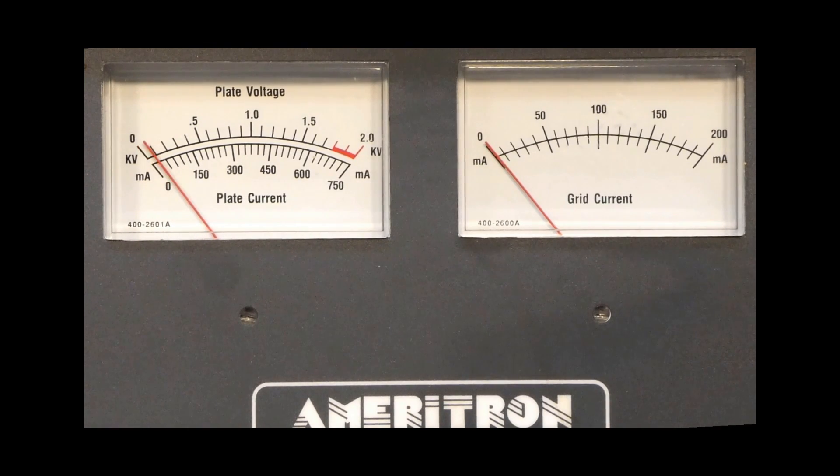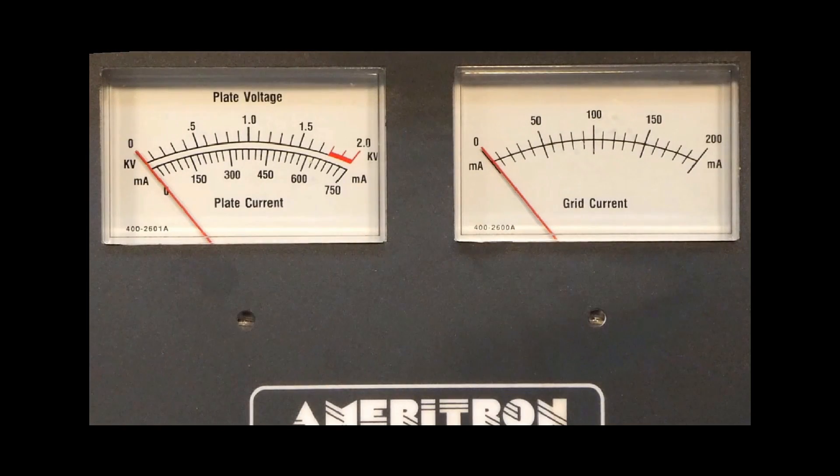Now this is an amplifier that has a shorted meter protection diode. It's the same situation: I have the radio in CW mode with no key plugged in, so there's no RF output from the radio when I activate it manually. I'm going to key and unkey the amplifier over and over again.